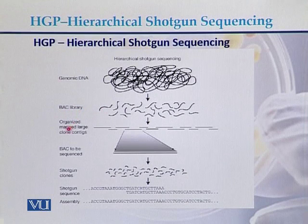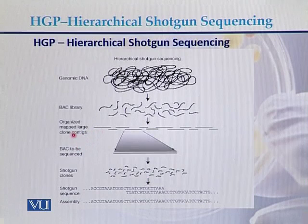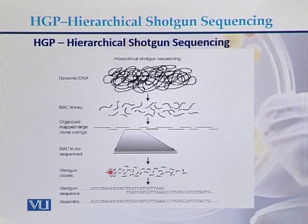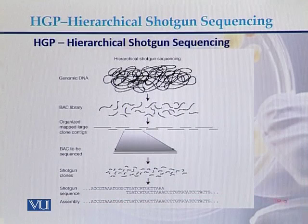Then these BAC libraries were organized in the form of clone contigs. Once the clone contigs were arranged, the BACs were sequenced with the help of shotgun clones — meaning BACs were again digested into smaller fragments, those smaller fragments were sequenced, and there was an assembly of the sequence of the human genome.